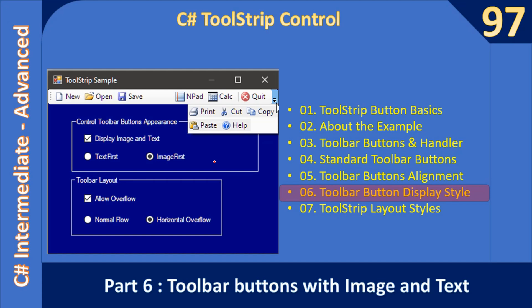Hello friends, welcome to the C# intermediate to advanced tutorial. You are watching part six of the video on the C# ToolStrip control. Here we are going to look at toolbar button display style. In all our previous videos we saw toolbar buttons that display only the icon, but here the toolbar button is displaying both icon and text side by side.